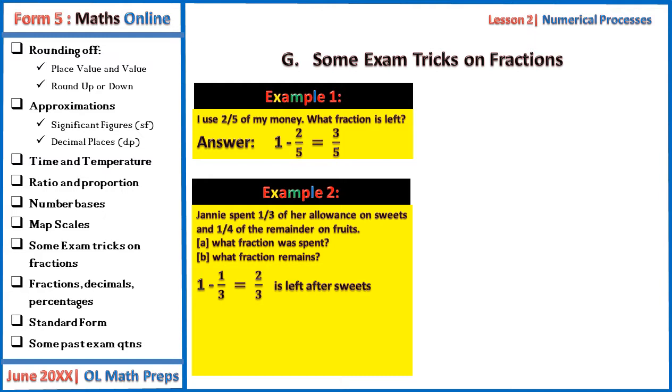So the amount or the fraction spent on sweets is one-third. So from the spending on sweets, we have one minus one-third, which is two-thirds. That is left after this expenditure on sweets.